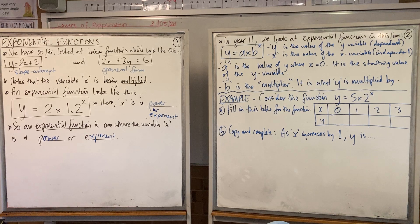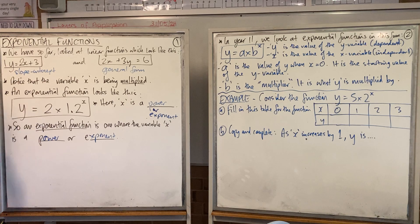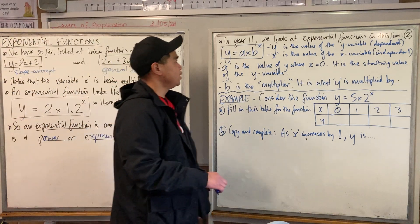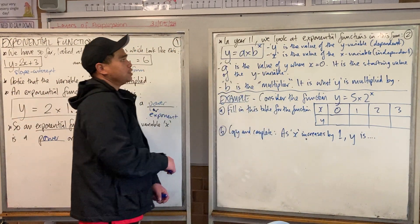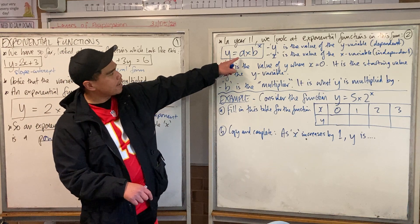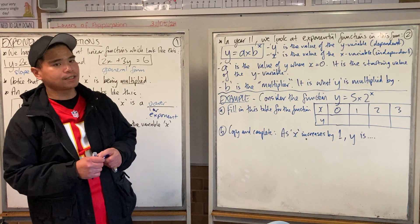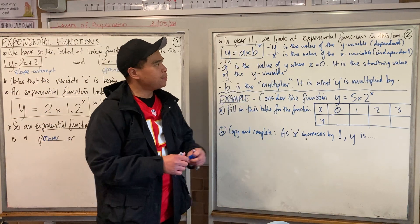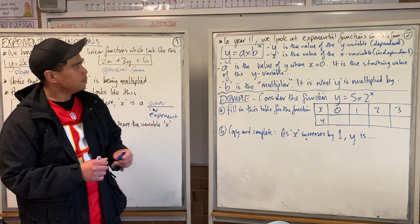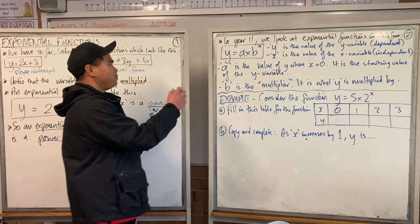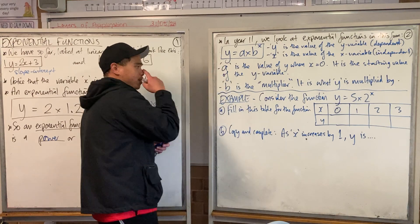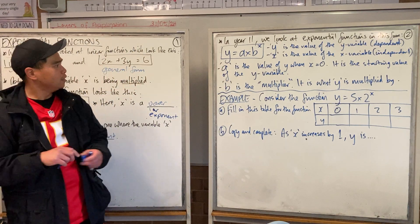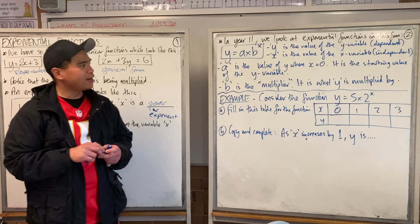So we've been looking at linear functions — most of your test is on that — but the last little bit is to go over these types of functions. This is where the notes will start. In Year 11, we look at exponential functions in this form: y is equal to a times b to the power of x. y is the value of the y variable, and x is the value of the x variable. The important stuff is to understand what a and b stand for. So a is the value of y when x is equal to 0.